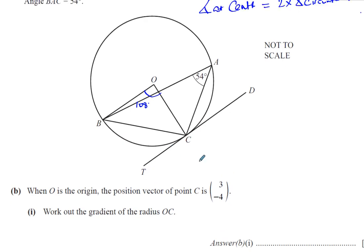When O is the origin, the position vector of point C is (3, -4). Work out the gradient of the radius OC. The word position vector always refers to the origin. It's the position of that point in relation to the origin, so it means it's the vector from O to C. If you imagine O at the origin (0,0) and to get to C you go 3 to the right and 4 down, the coordinates of C are (3, -4).